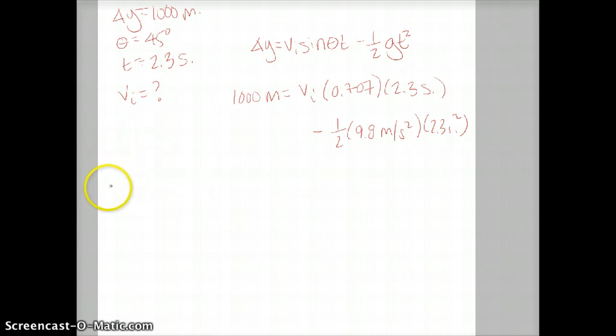All right, plugging in some of these numbers then, we have 1,025.92 is going to be equal to 1.63 times vi, which is going to mean that our vi is equal to 629.4 meters per second.